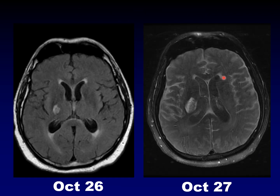Looking again at this diffuse FLAIR signal abnormality — these two studies are one day apart, and that is critical. Theoretically, this patient could have suddenly developed a rip-roaring meningitis, but this would be pretty quick even for listeria. No, this is an artifact of the gadolinium administration that occurred 24 hours earlier. There has been a slow leaching of the gadolinium chelate into the CSF — even from normal meninges, this can occur. This is not indicative of diffuse meningitis.